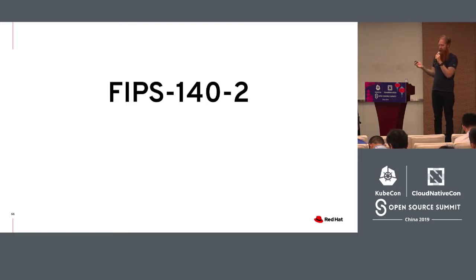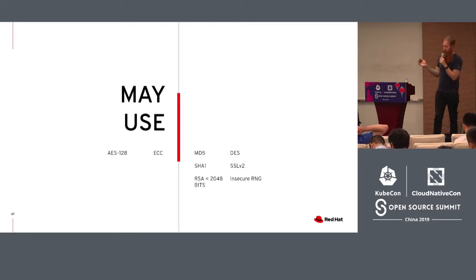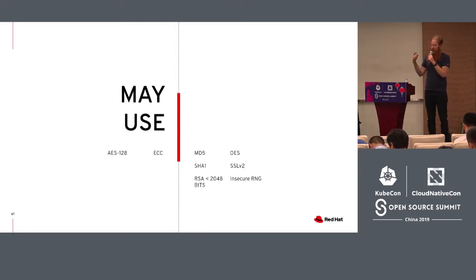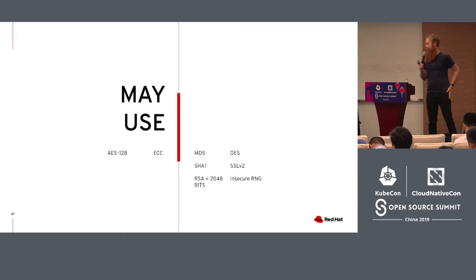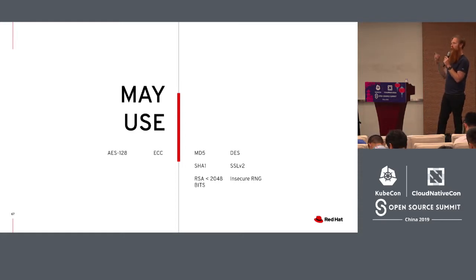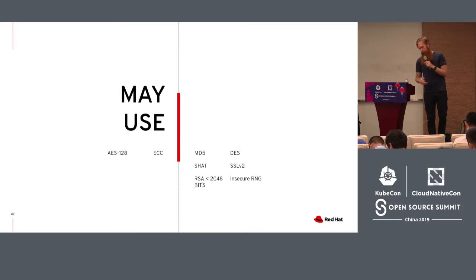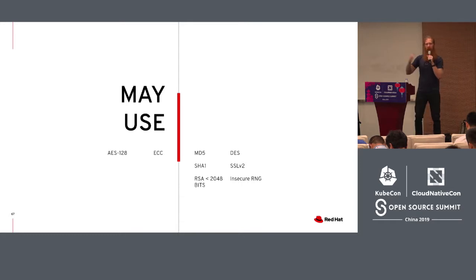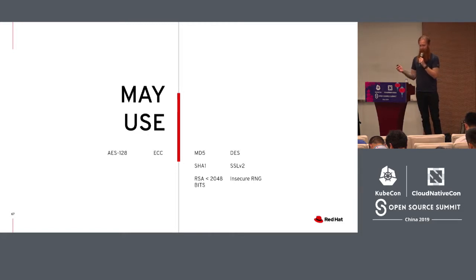Even other nation states use these standards as a rubric for developing their own guidelines. FIPS 140-2 defines things like: you can use AES, you can use certain types of ECC, but you can't use DES. You can't use triple DES with less than three keys. You can't use RSA with less than 2048 bits. That means things like ED25519 — you can't use it, despite the fact that it may be more secure, because it has not been proven that way.